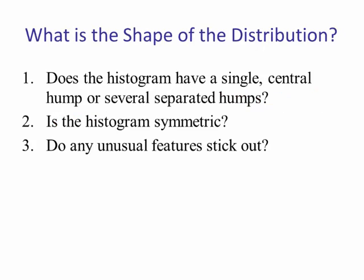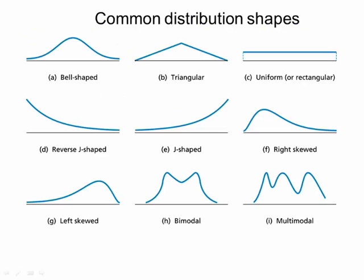Does the histogram have a single central lump or several separated lumps? Is the histogram symmetric? Do any unusual features stick out? We'll look at some examples of these. Now here are some common distribution shapes.